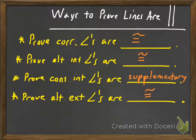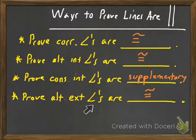Each of these facts corresponds with either a postulate or a theorem from section 3.3, and they are all called converses — like the Corresponding Angles Converse, the Alternate Interior Angles Converse, and so on. I'll explain the word 'converse' in class, but these are names you need to be familiar with.